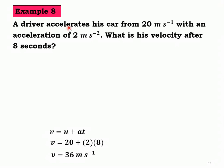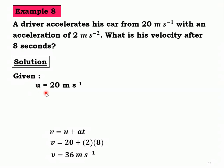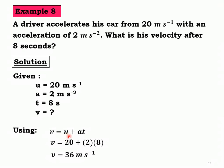Example 8: A driver accelerates his car from 20 m/s with an acceleration of 2 m/s². What is the velocity after 8 seconds? Given: u = 20 m/s, a = 2 m/s², t = 8 s. Displacement s is not given, so we use v = u + at. v = 20 + (2)(8) = 36 m/s. It's simple once you know how to use the linear equations.